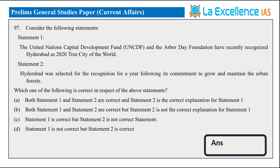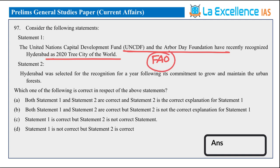Next is an assertion and statement based question — 97th question of Set A. Statement 1: UN Capital Development Fund and Arbor Day Foundation recently recognized Hyderabad as 2020 Tree City of the World. This is incorrect — it was recognized by the Food and Agricultural Organization, not by UNCDF. So statement 1 is incorrect. Statement 2: Hyderabad was selected for recognition following its commitment to grow and maintain the urban forest — this is correct. That is why the answer is D: statement 1 is not correct and statement 2 is correct.